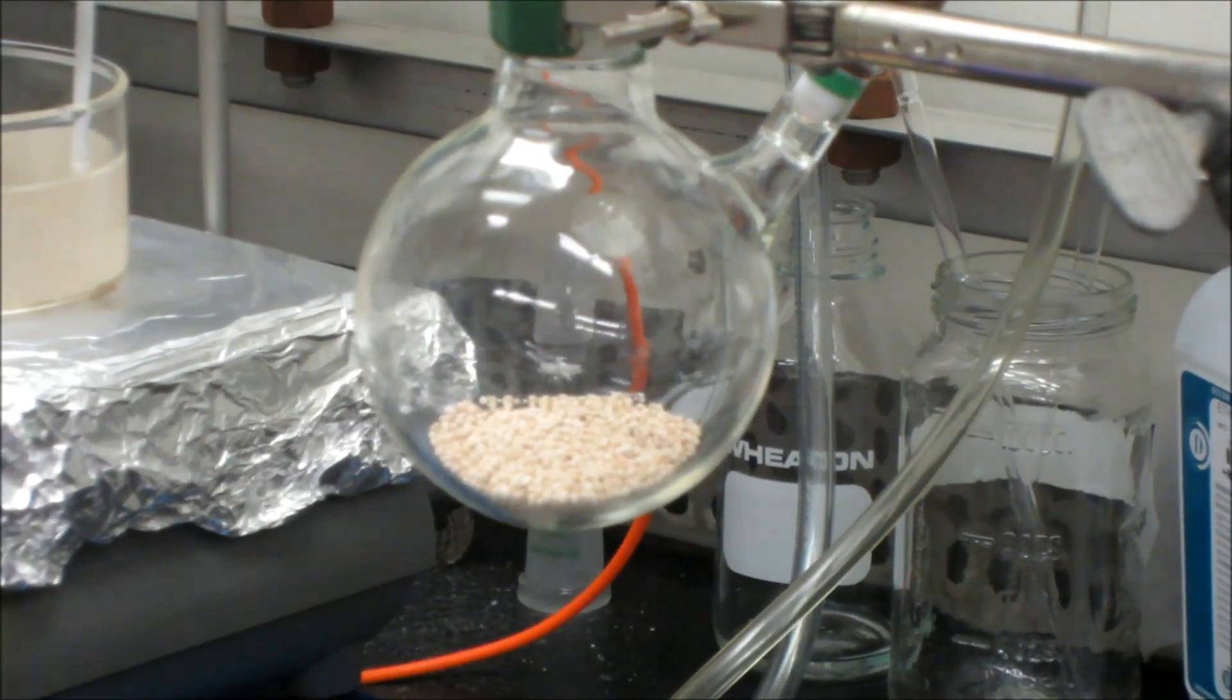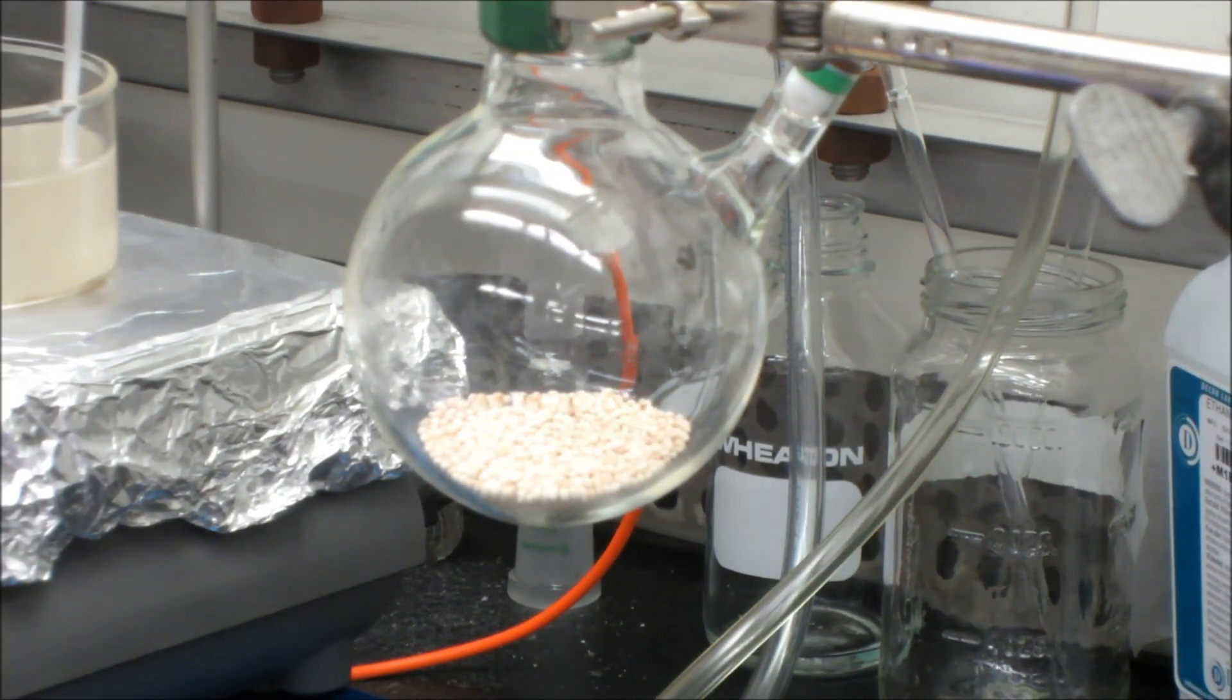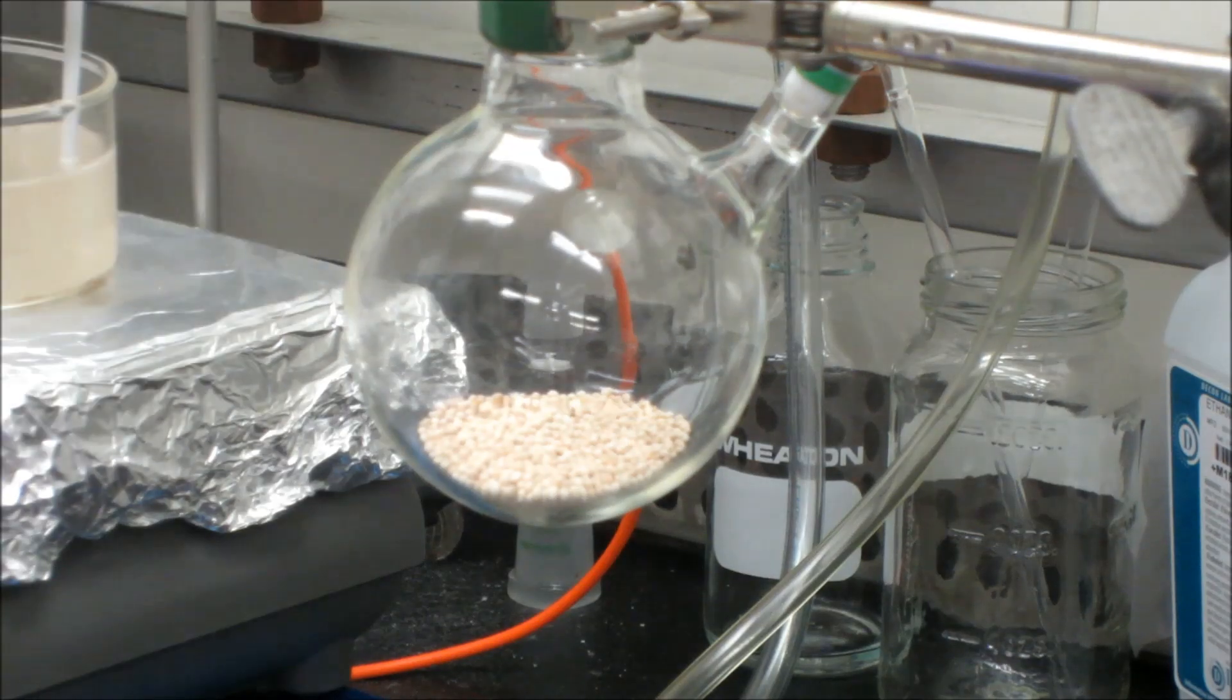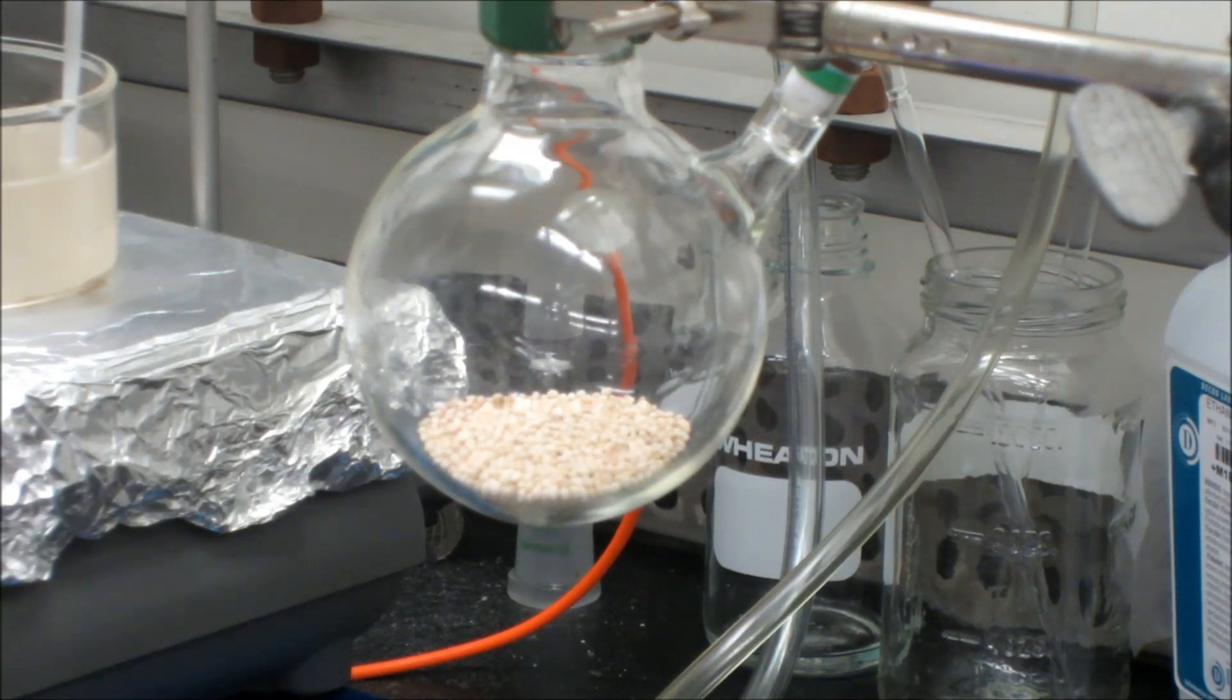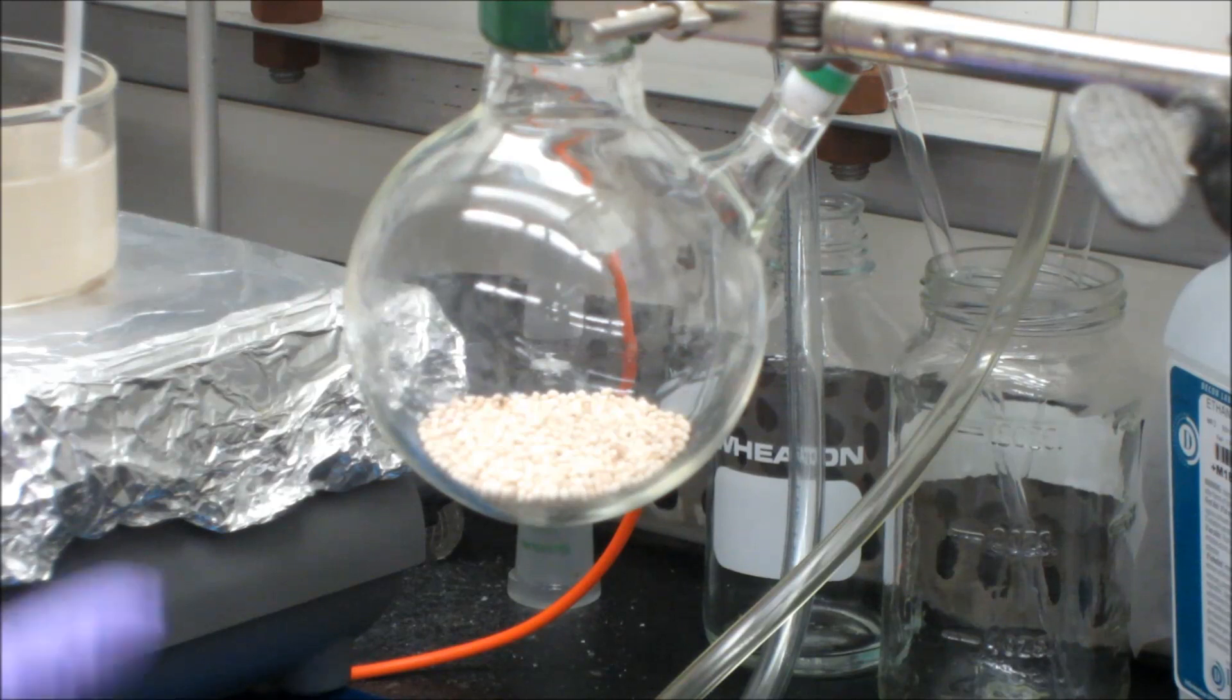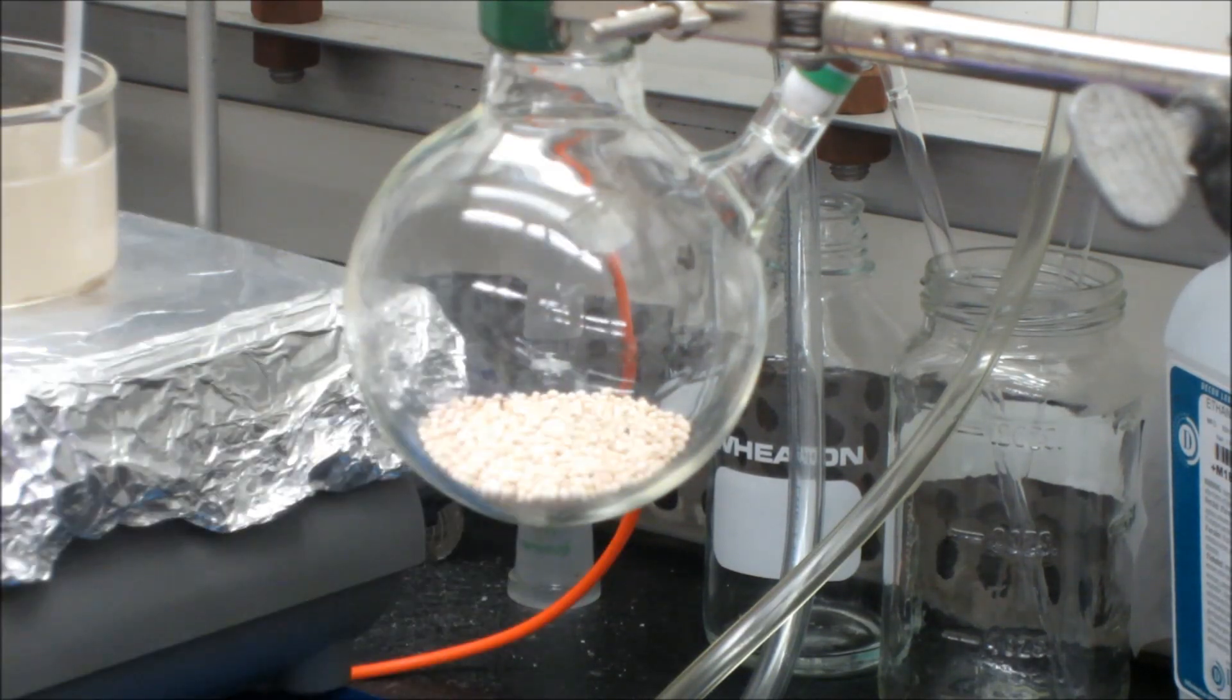So what we do is shut the system off to nitrogen and then open it up to vacuum. So now that this is open to vacuum, the water that is condensed is going to get pulled in and collected by the trap.